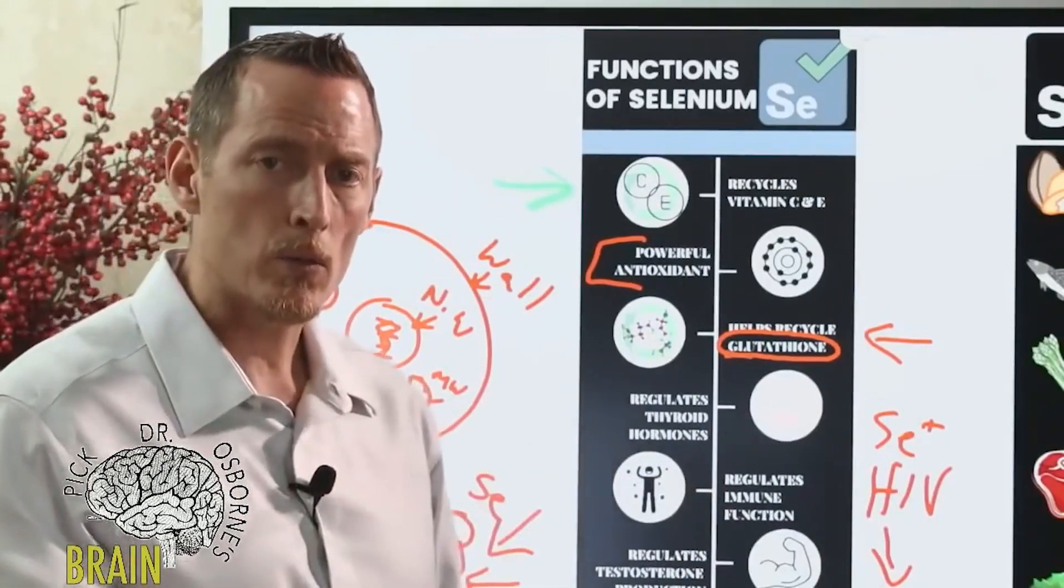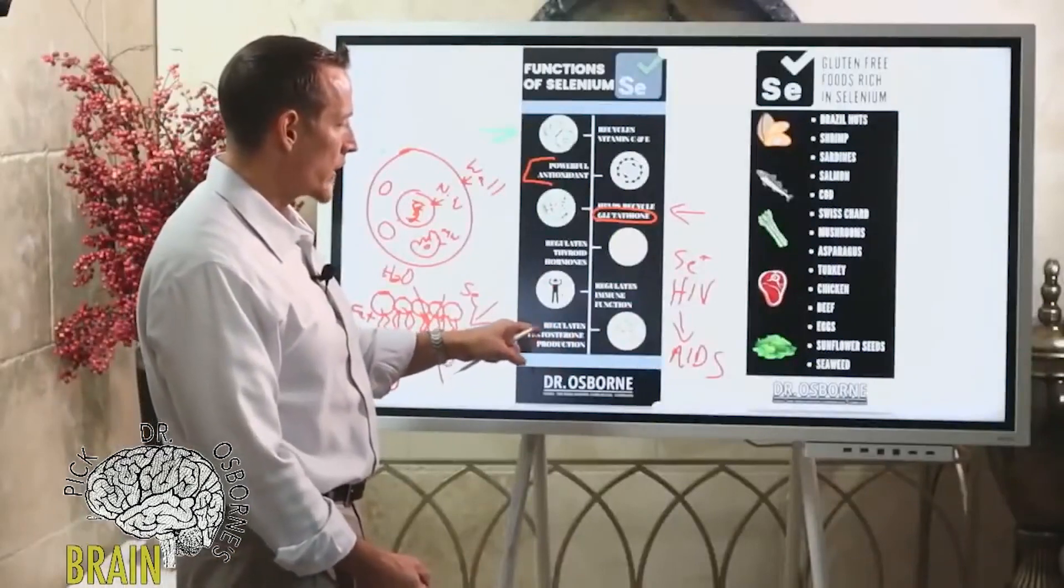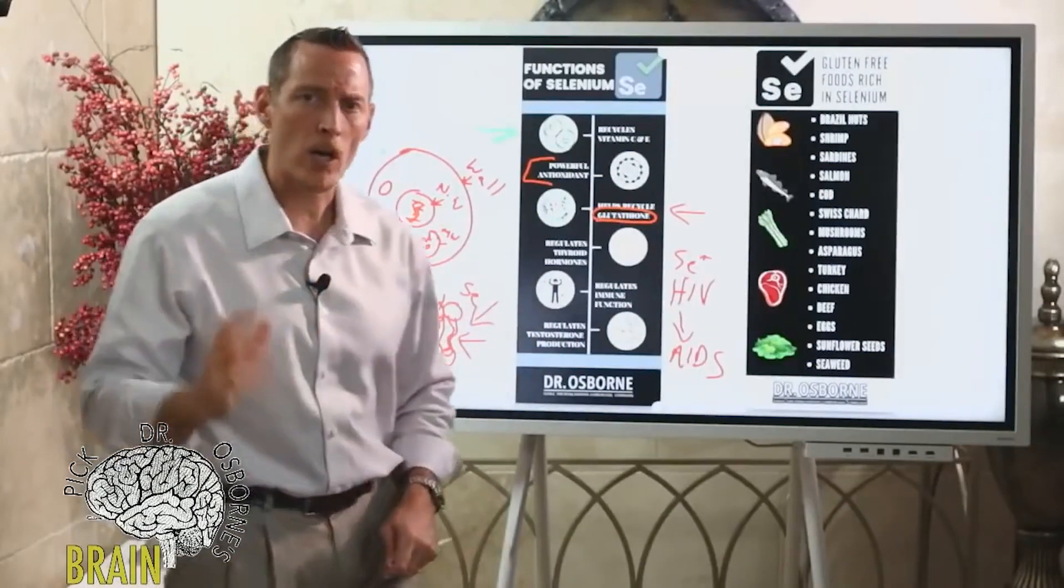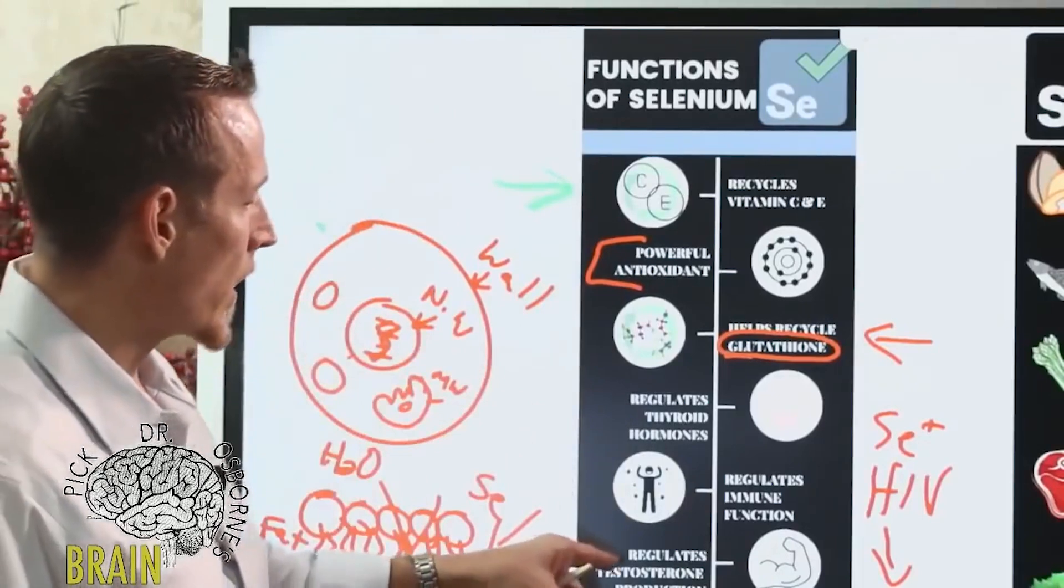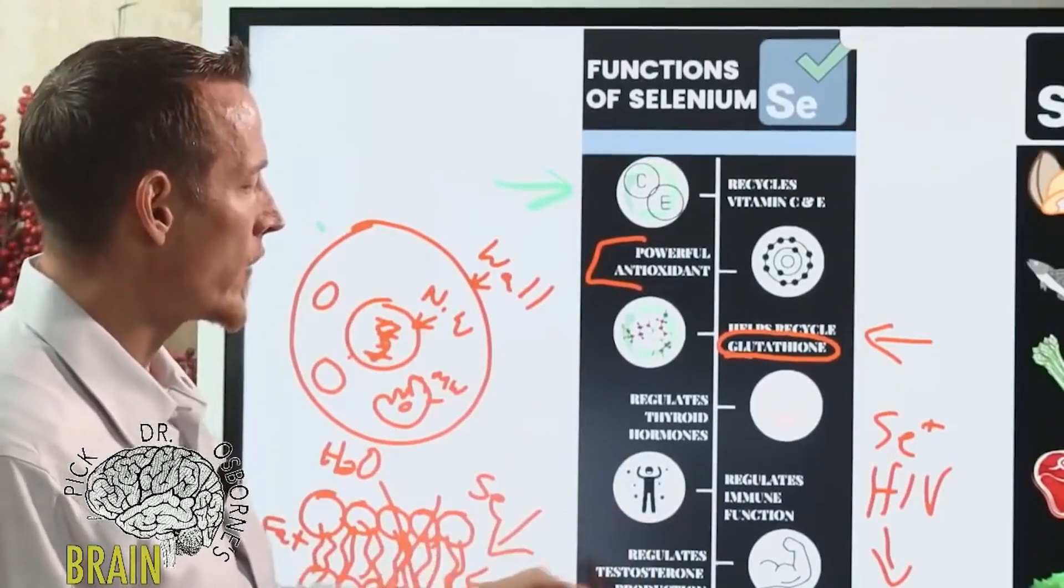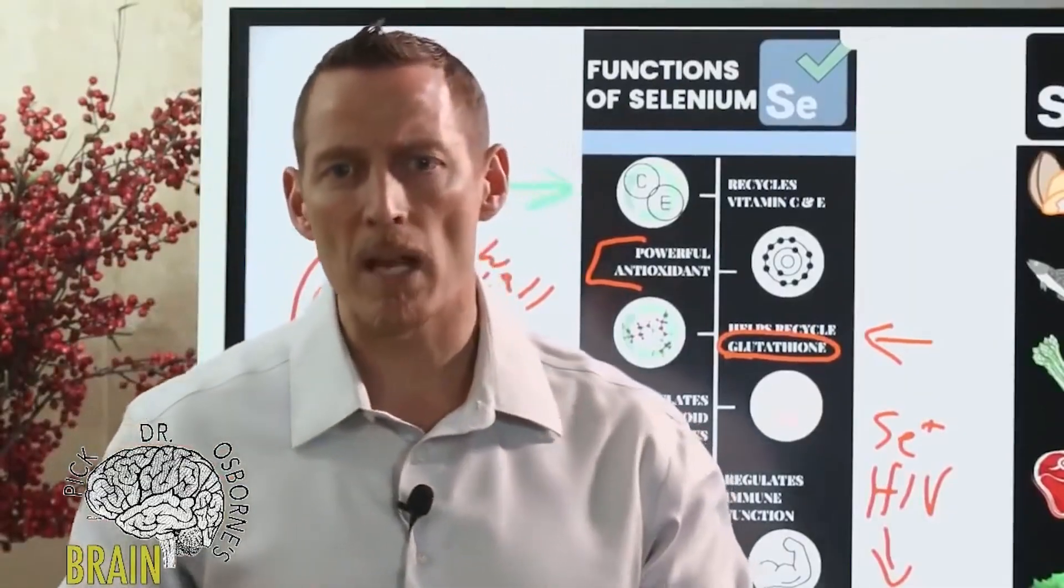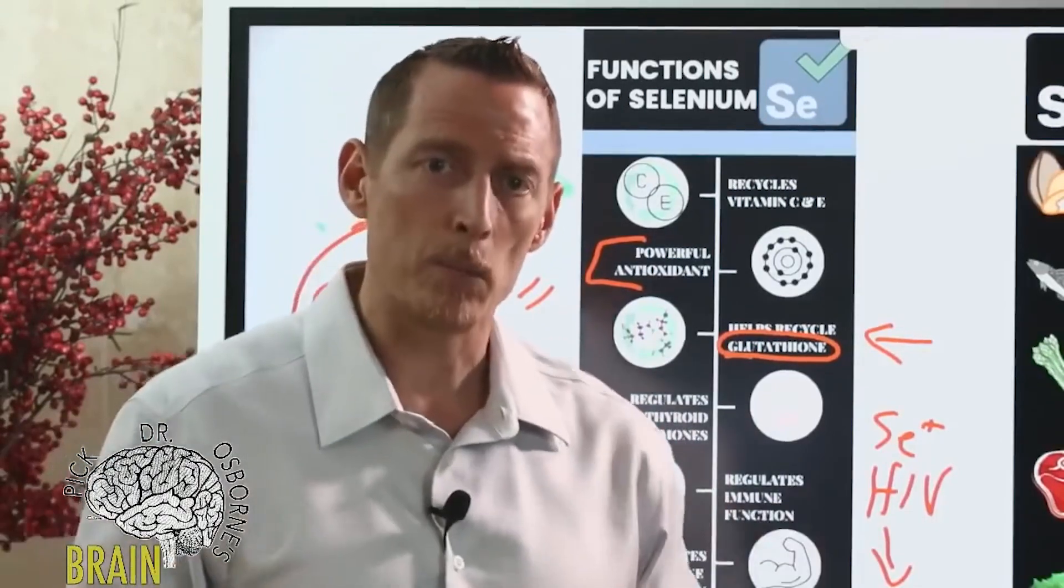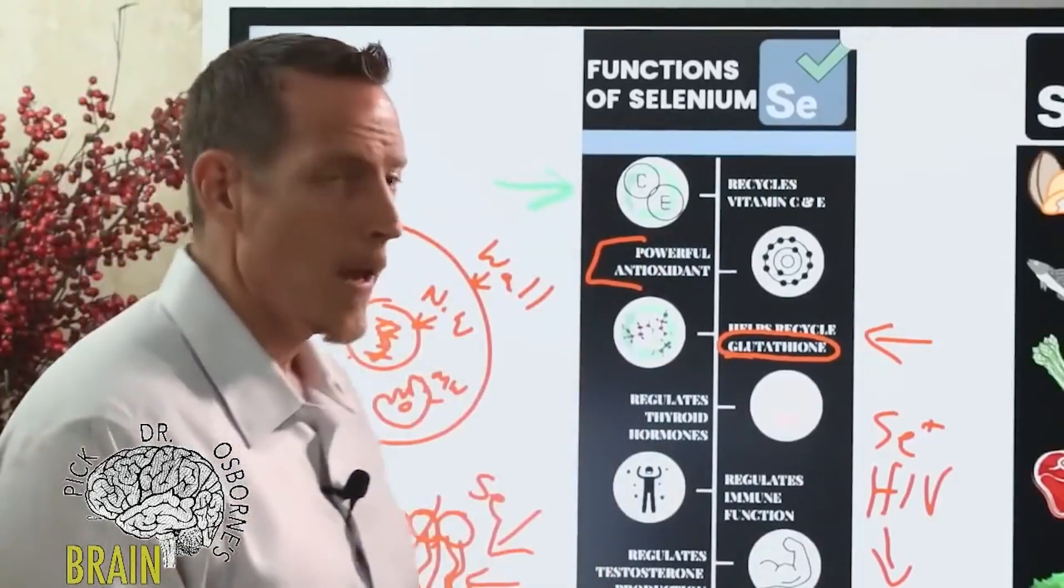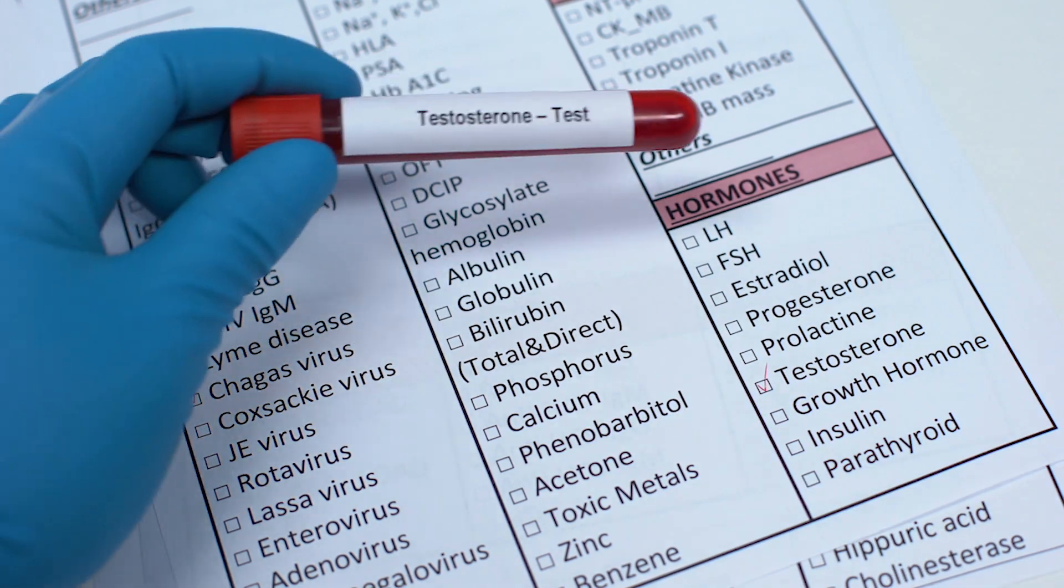We know that selenium regulates testosterone production. In men, one of the organs that stores or concentrates the most selenium are the gonads, and that's because we've got to make testosterone and selenium is required for that process. For a lot of men we'll see, for example, benign prostatic hypertrophy - we'll see the prostate enlarge, we'll see the man not be able to gain muscle, they're losing their muscle mass. They might be working out and they still can't build muscle because their testosterone is low, and the doctor wants to give testosterone without any thought as to whether or not selenium deficiency is contributing.